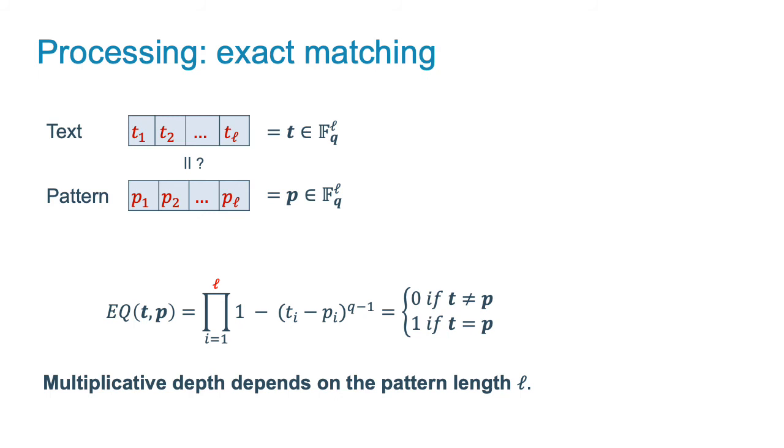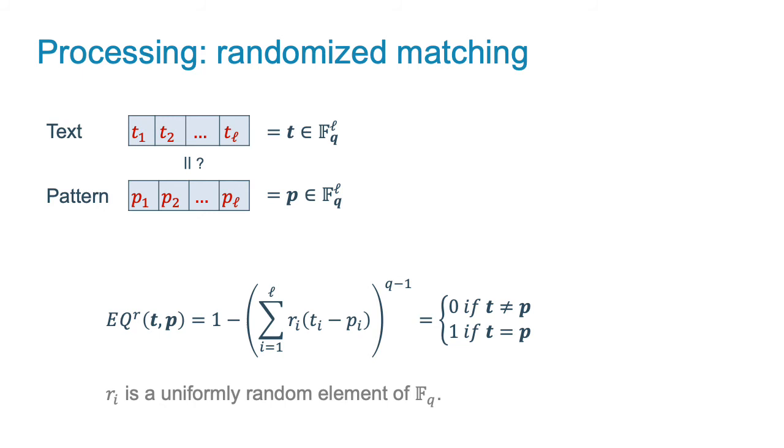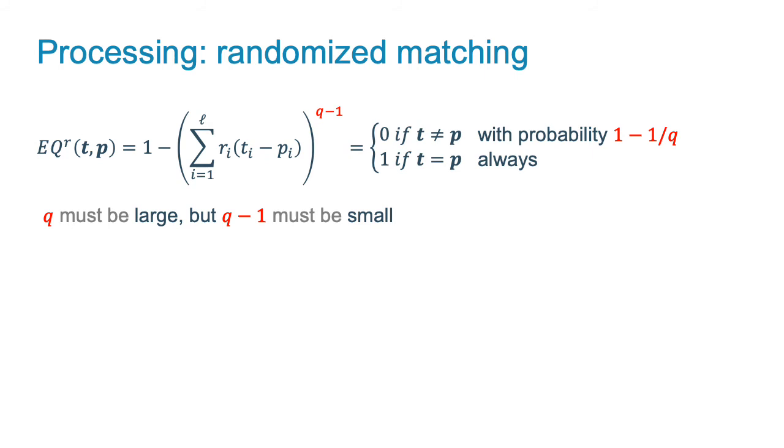The drawback of this algorithm is that its multiplicative depth depends on the pattern length. We propose an alternative randomized function whose depth depends only on the size of the slot finite field. If vector t is equal to vector p, then this function will always return 1. If the vectors are different, the output is 0 with probability 1 minus 1 over q. Hence, the size of the finite field q must be large to have a decent success probability, but at the same time it must be small such that the depth of the matching function is practical.